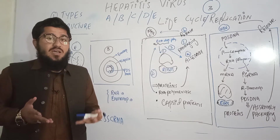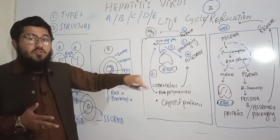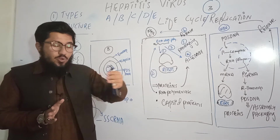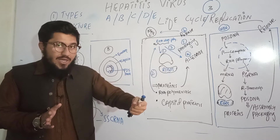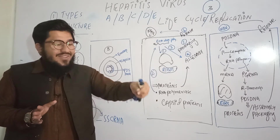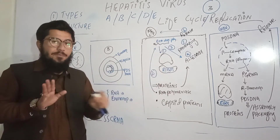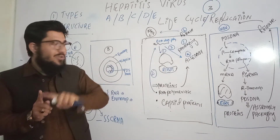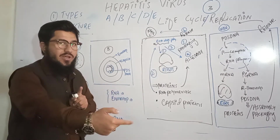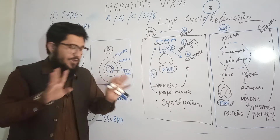Negative-sense RNA cannot go directly to the ribosomes for translation into proteins. It must first synthesize complementary RNA. That complementary RNA then comes to the ribosomes for translation. In short: positive-sense RNA goes directly to ribosomes; negative-sense RNA must first synthesize complementary RNA, which then goes to the ribosomes for translation.